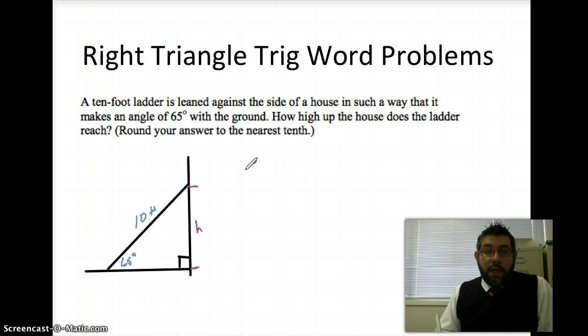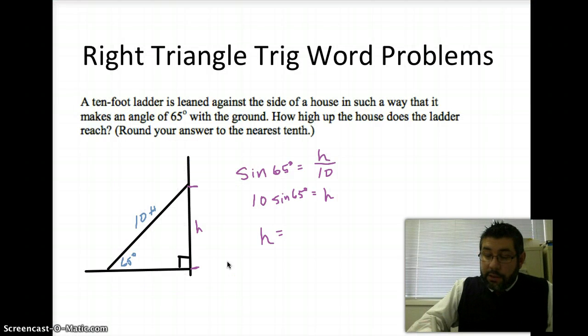So, we're going to use the sine. The sine of 65 degrees is equal to the opposite over the hypotenuse. And it's just a matter of solving: 10 times the sine of 65 equals h. We're just going to plug that in our calculator. If we plug that into our calculator, we're going to get about 9.1. So, 9.1, and this is in feet. That's pretty much all there is to that one. Let's take a look at another one.